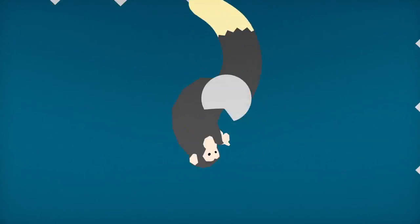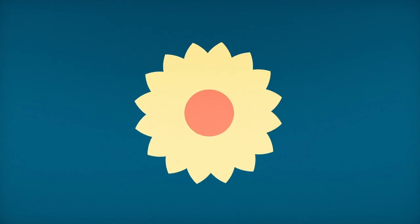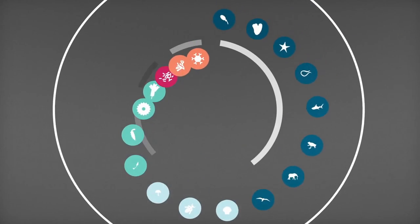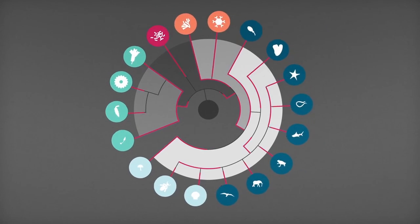But we also have genes in common with fish, plants and bacteria. Powerful evidence that all life came from a single universal ancestor billions of years ago.